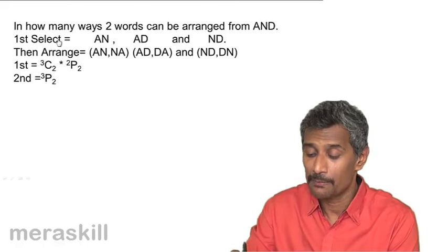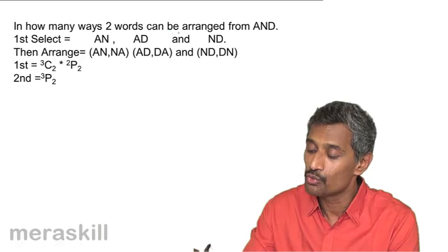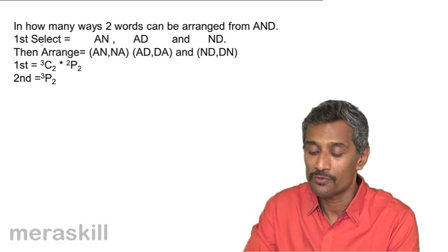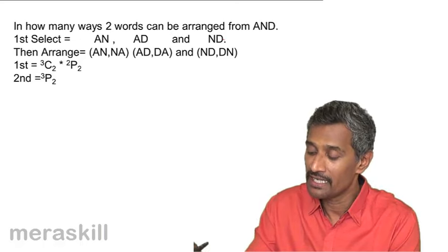So let's take this example to brush up our concepts once again. In how many ways can two words be arranged from AND? So first you need to select AN, AD and ND.